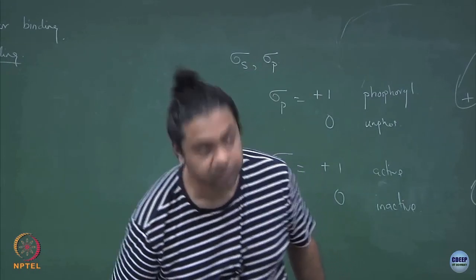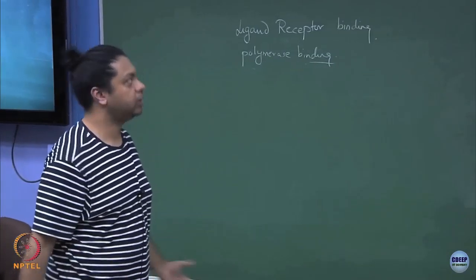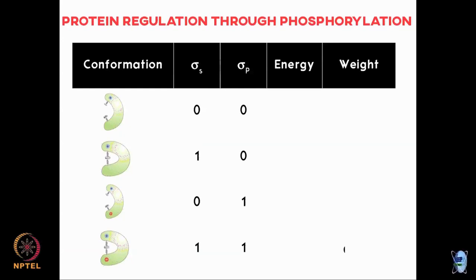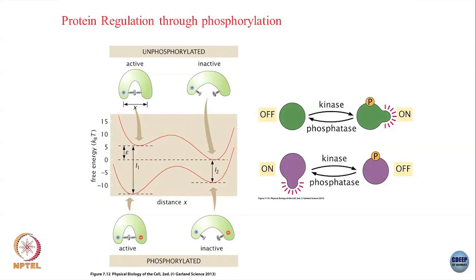How many possible microstates are there? Four — 2 times 2. The four states are: inactive unphosphorylated, active unphosphorylated, inactive phosphorylated, and active phosphorylated. The top two are unphosphorylated and the bottom two are phosphorylated. I can write down a corresponding energy for each of these by keeping in mind the energy level diagram.